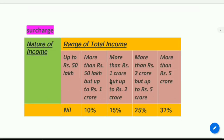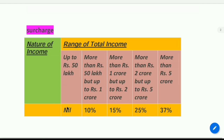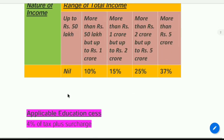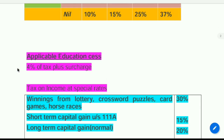Next, surcharge: up to Rs. 50 lakh, surcharge is nil. If total income is between Rs. 50 lakh and Rs. 1 crore — 10%. Rs. 1 crore to Rs. 2 crore — 15%. Rs. 2 crore to Rs. 5 crore — 25%. If total income is more than Rs. 5 crore, surcharge is 37%. Remember: up to Rs. 50 lakh, surcharge is nil. Then education cess is 4%.